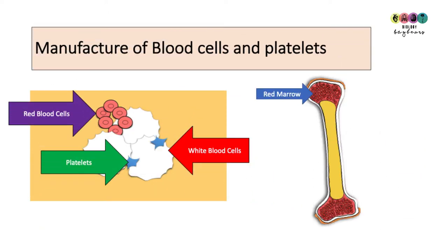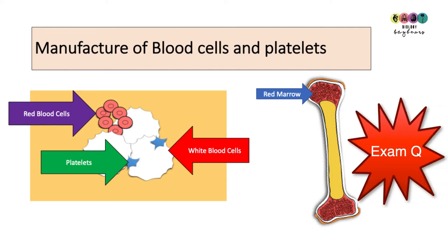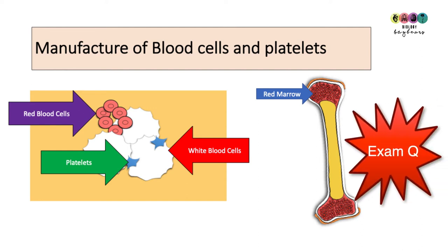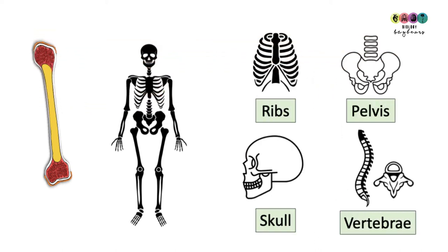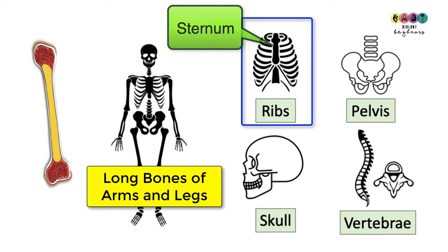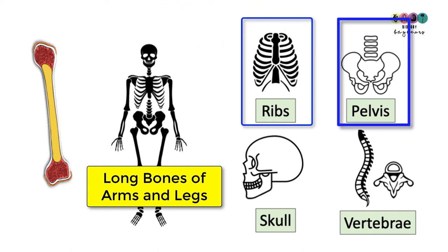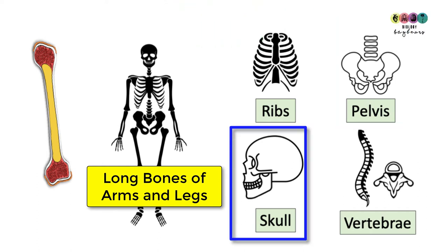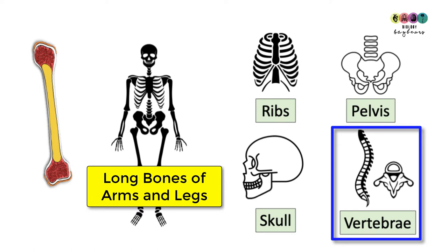The last function is the manufacture of blood cells and platelets. Red blood cells, white blood cells and platelets are made in the red bone marrow of your bones, and it's particular bones which you have to be able to give examples of — often asked in exams. Blood cells are made in the long bones of the arms and the legs, the ribs, the sternum which is your breastbone, your pelvis, your skull, and the vertebrae which make up your back.